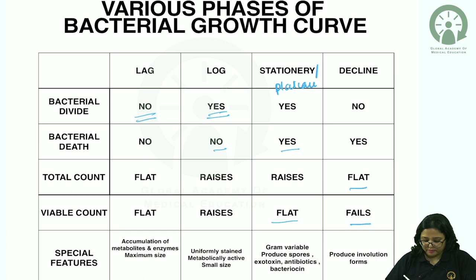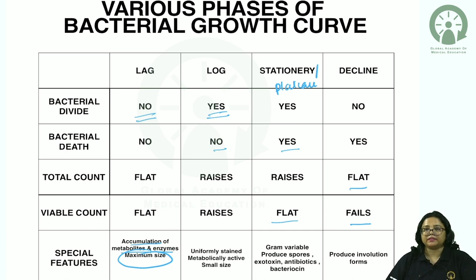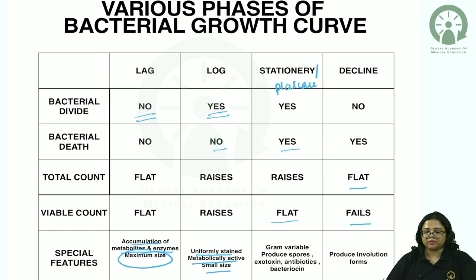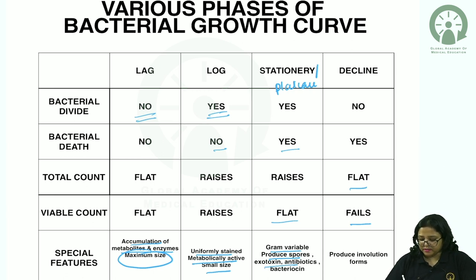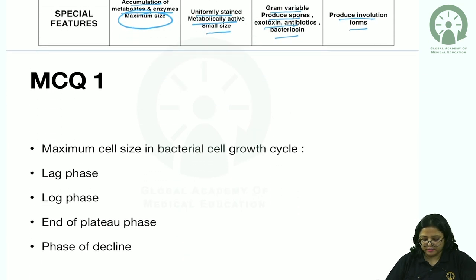Special features of the lag phase: cells assume maximum size, there is accumulation of metabolites and enzymes, and as metabolites decrease, the environment becomes unfavorable — staining becomes gram variable and exotoxins are produced. In the decline phase, there is production of involution forms.